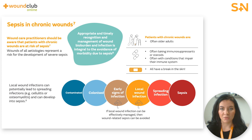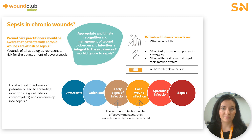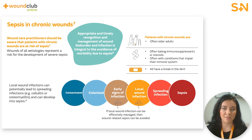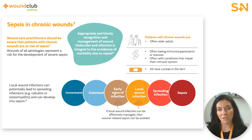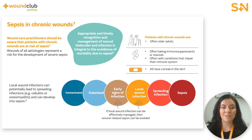When sepsis develops in people with chronic wounds, it doesn't spring from nowhere. Where sepsis is wound related, the wound will have progressed along the infection spectrum. When microbes in a colonised wound proliferate to a point where the patient's immune system can't keep them in check, early signs of infection develop. If this isn't recognised or treated effectively, it can develop into a local wound infection and can potentially lead to spreading infections such as cellulitis or osteomyelitis, and can then go on to develop into sepsis. The appropriate and timely recognition and management of wound bioburden and infection is integral to the avoidance of morbidity due to sepsis. So when assessing your patients' wounds, be vigilant.